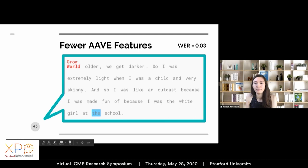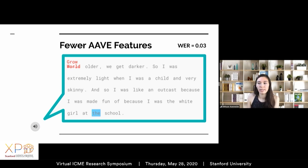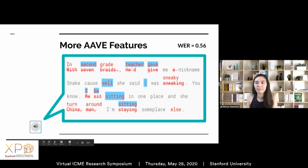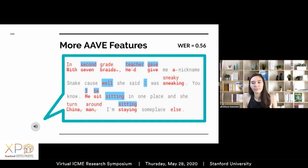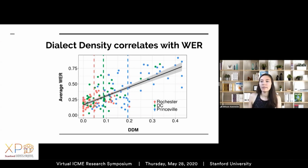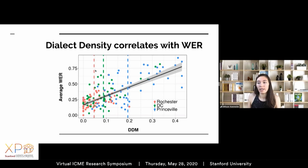One audio example had only one AAVE feature — syllable-initial fricative stopping — and a low word error rate. Another example with many AAVE features had a high word error rate: 'Well, my second grade teacher gave me the nickname Snake because she said I was sneaky. I'd be sitting one place and she'd turn around and I'm sitting somewhere else.' When we compare examples across locations, we find a strong correlation between dialect density — the DDM measure — and the word error rates calculated by ASRs. ASRs perform worse on voice snippets that invoke a stronger AAVE accent.